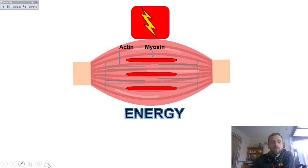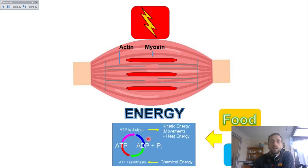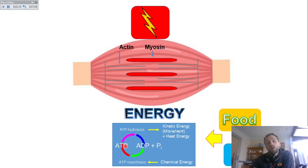So how do muscles get the energy to allow contraction to occur? They get it through ATP hydrolysis — ATP breakdown. ATP is adenosine triphosphate, and it gets broken down into ADP (adenosine diphosphate) and inorganic phosphate. One of the phosphate molecules gets broken off, and that process of breaking it down liberates energy that can be harnessed to allow muscle contraction.